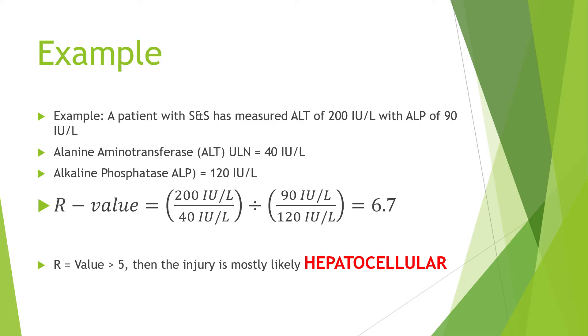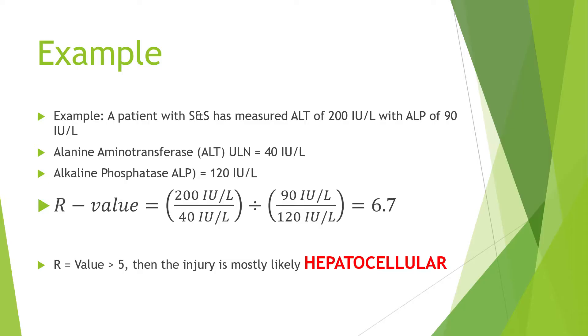To make this easier to understand, we're going to look at a case. A patient presents to the ED with signs and symptoms of acute liver injury. The liver enzymes have been measured and this patient has an elevated ALT of 200 units per liter and an ALP of 90. Since the upper limit of normal for ALT is around 40 and for alkaline phosphatase is 120, we can plug these four values into our equation. The R-value equals 6.7, and according to the American College of Gastroenterology guidelines, an R-value greater than 5 is more indicative of hepatocellular damage.